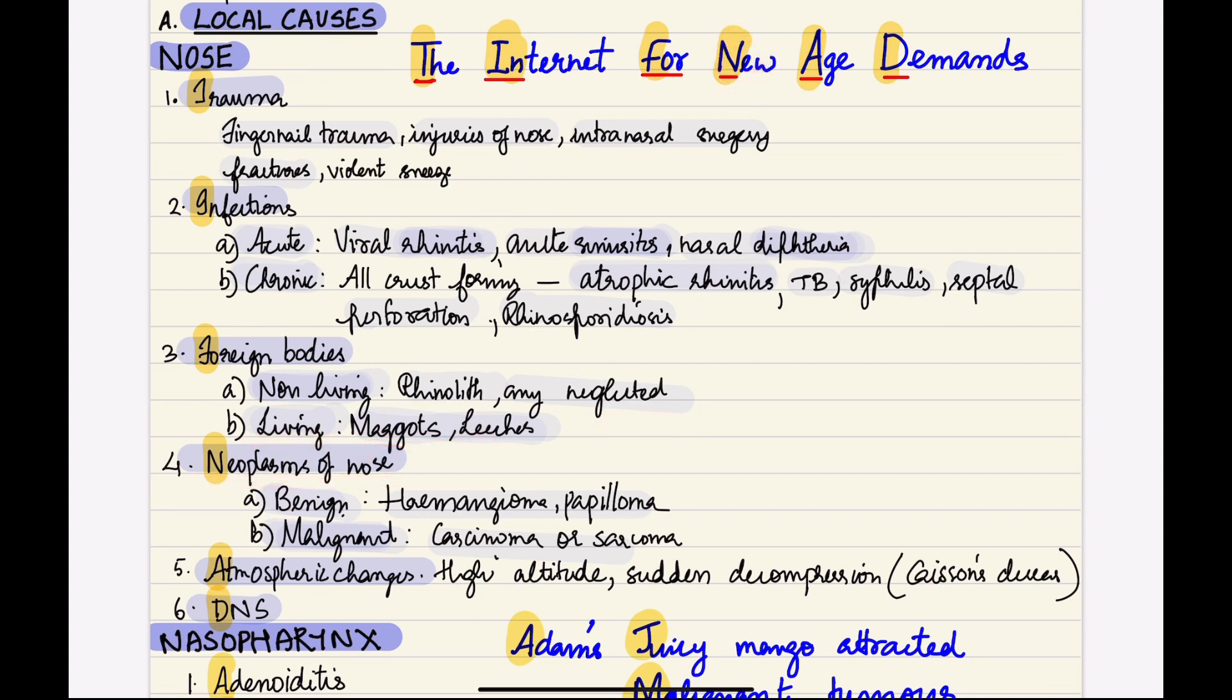N is for neoplasms of nose, which can be benign or malignant. Under benign we have hemangioma or papilloma; under malignant we have carcinoma or sarcoma. A is for atmospheric changes when we go to higher altitudes or sudden decompression - that is Caisson's disease. D is for deviated nasal septum.